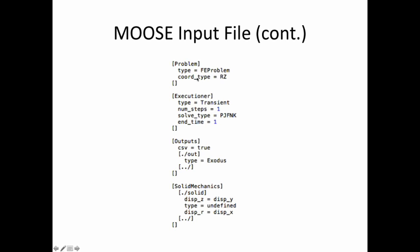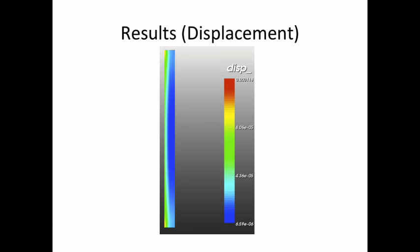The coordinate type is set to RZ since it's axisymmetric. I define the executioner and outputs - Peacock fills a lot of this in for you. I'm using the solid mechanics module. They also have a tensor mechanics module that also does solid mechanics, and the last I heard they were trying to get people to use that instead. You can look at that if you decide to use this program.